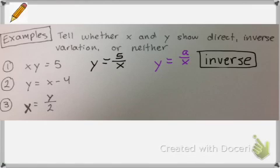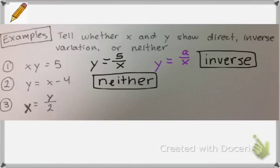Now look at number two. This one already says y equals. This is y equals x minus 4. Now essentially, if you see a plus or minus sign, this is going to be neither inverse nor direct variation. That's because it's not in the form of y equals a times x, and it's not in the form of y equals a divided by x.